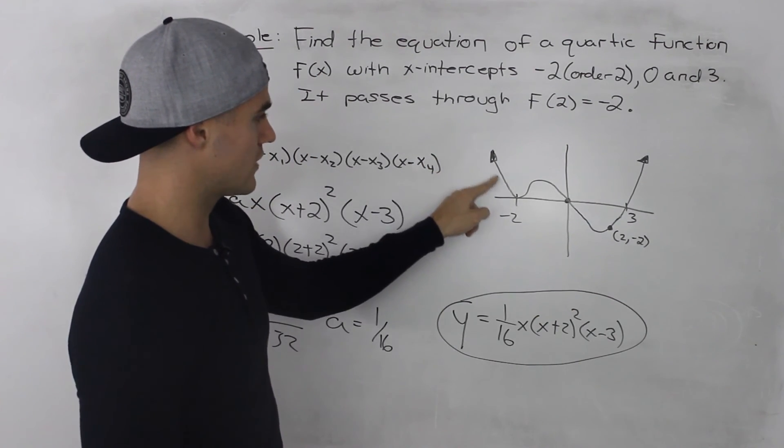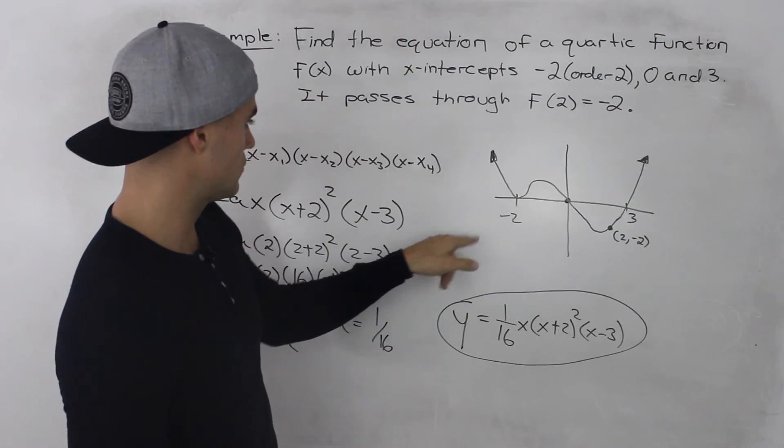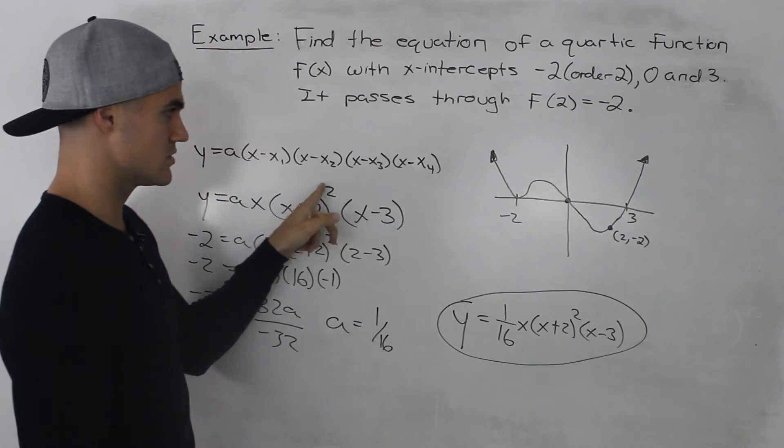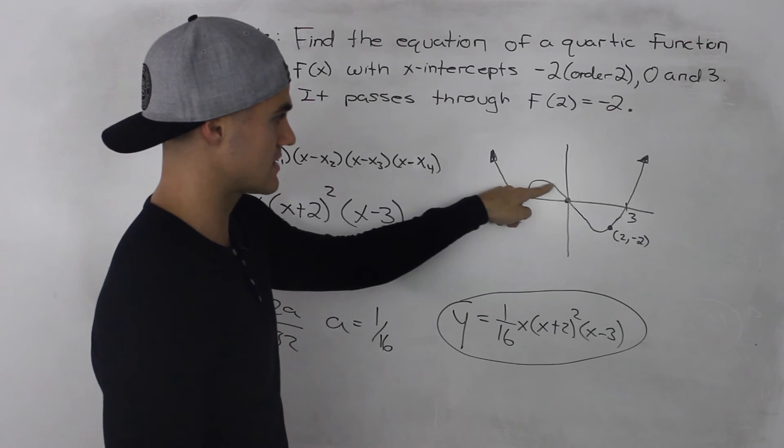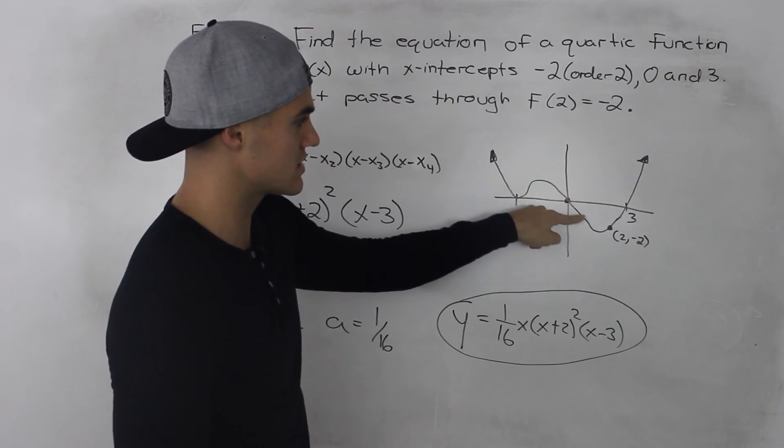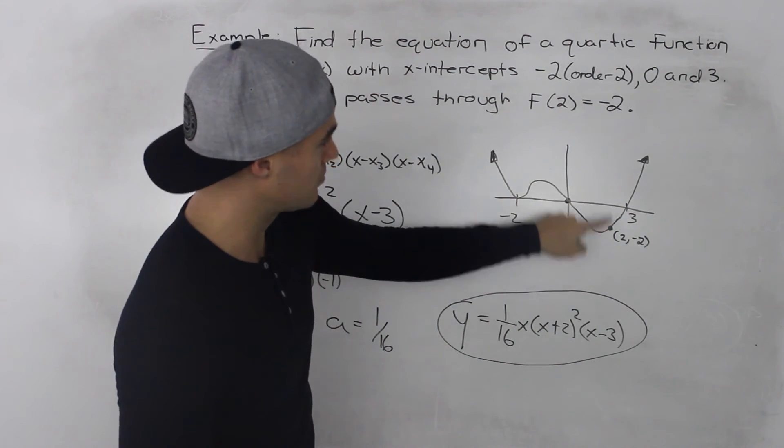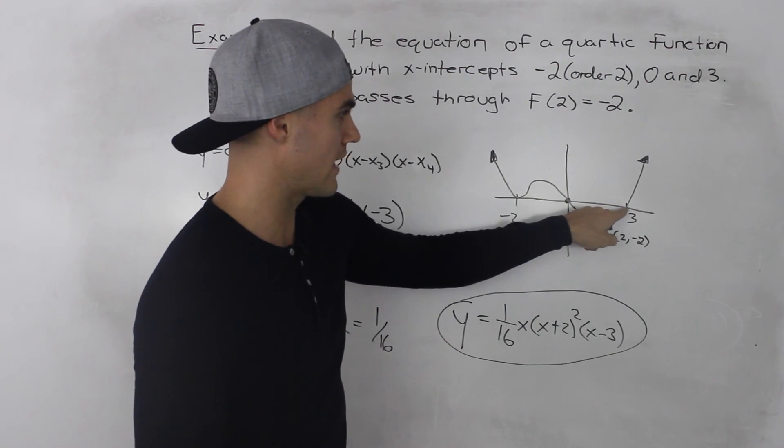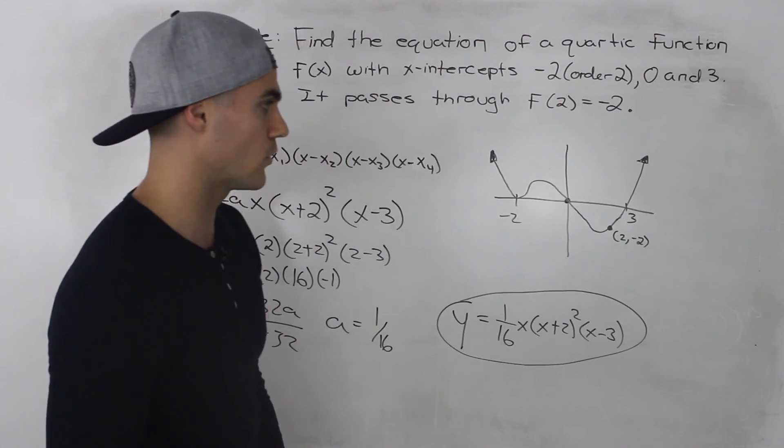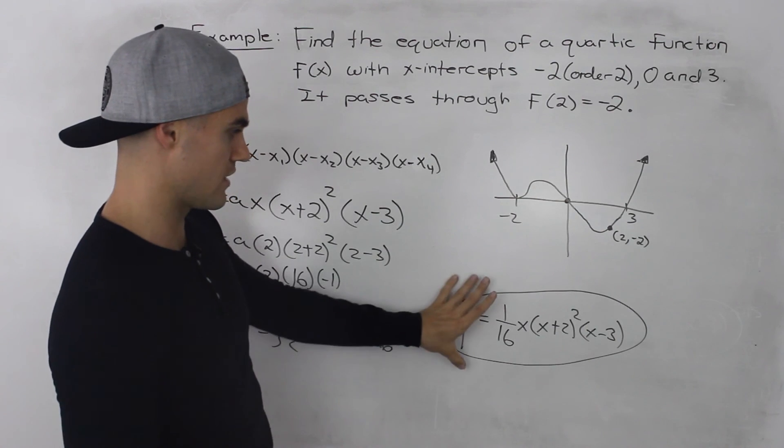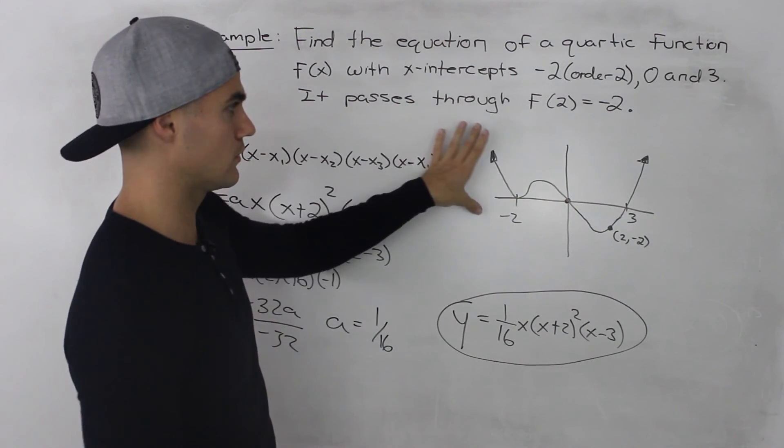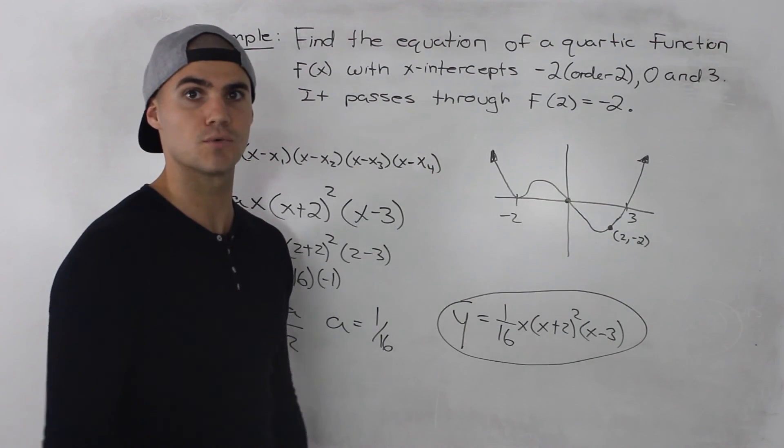So if we draw this, at -2, there is an even order. So it will bounce off the x-axis then, it will go through the 0 x-intercept, and then it will go through this point (2, -2), and then it will go through the x-intercept of 3 and then end off in quadrant 1. So that's how this whole scenario looks like graphically.